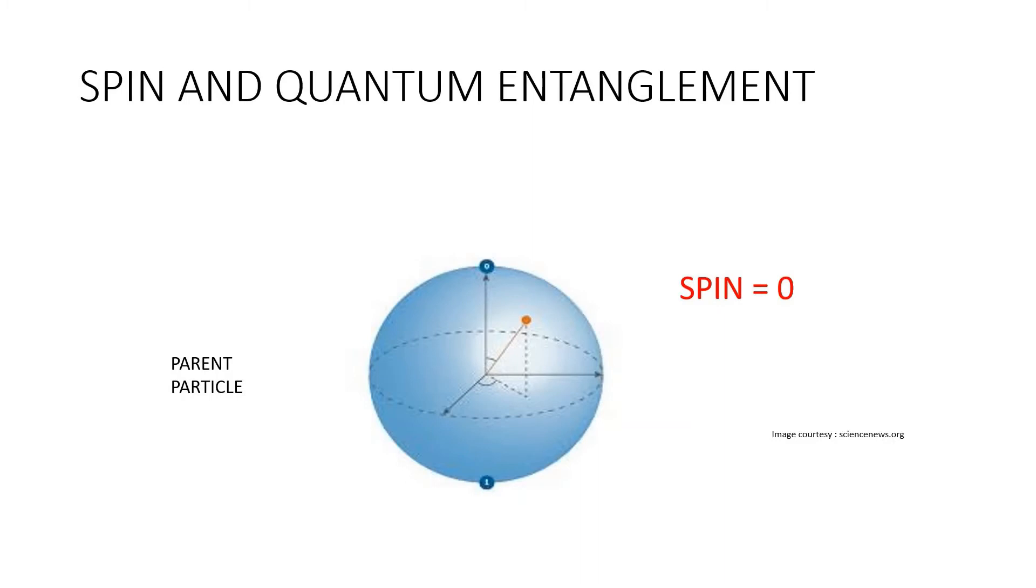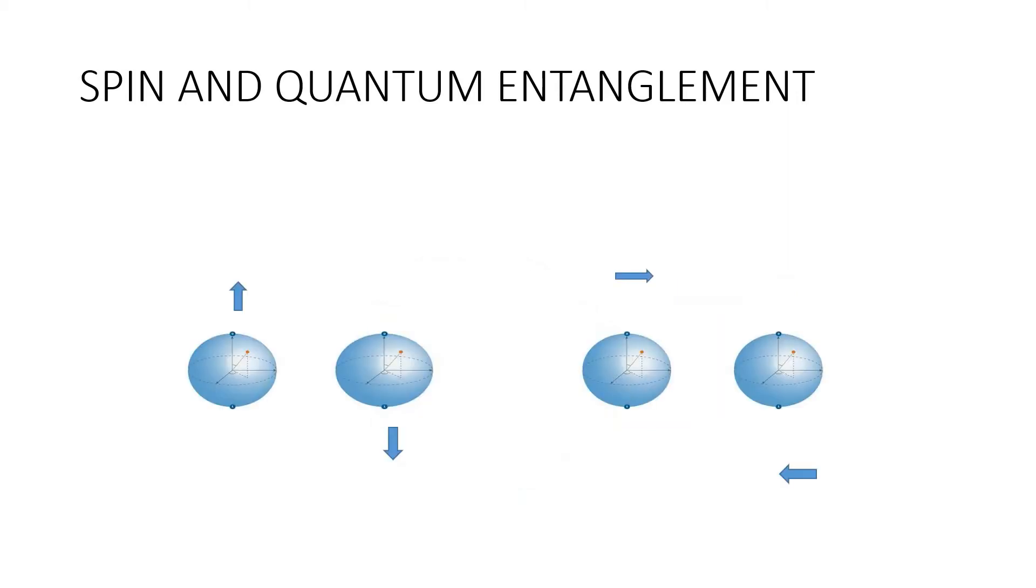Consider a parent particle with zero spin and let it decay into two particles. Spin is a conserved quantity and it can never change. If the parent particle has zero spin, then the two daughter particles must have opposite spin. If one has a spin pointing left, the other one must be right. If one is up, the other must be down. Hence, when we add the two, we get zero. This is the simplest example of a pair of entangled particles and they are governed by a single wave function.